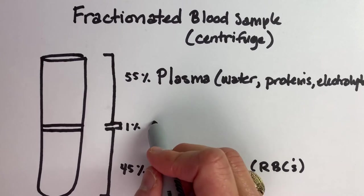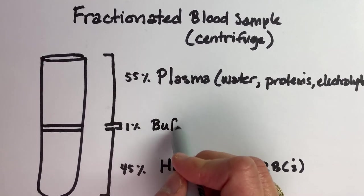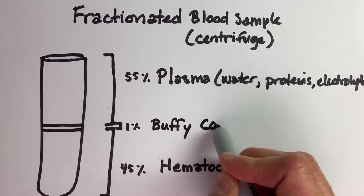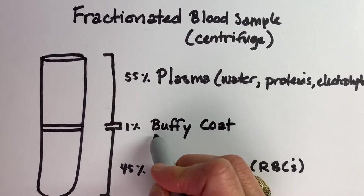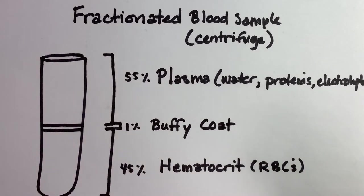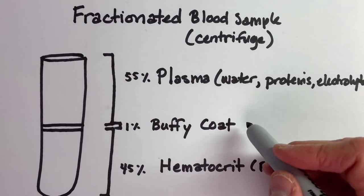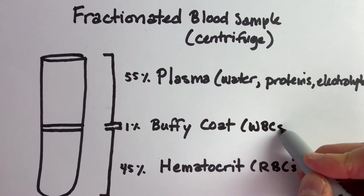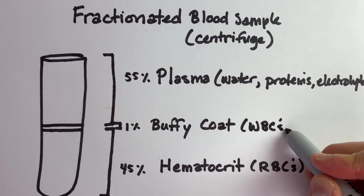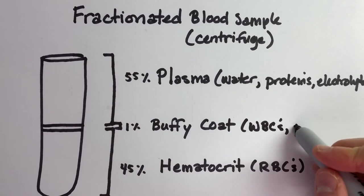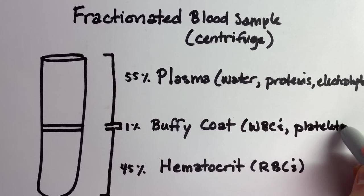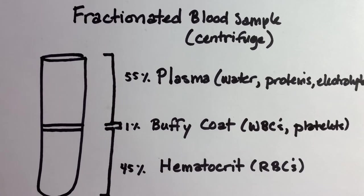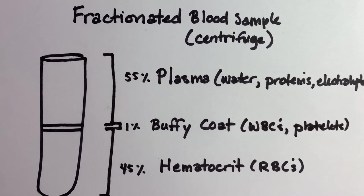And then right in the middle, you have this thing called a buffy coat. Buffy coat comes from the word buff, and the color buff is like a light tan or beige color. The buffy coat has things that kind of weigh in the middle. White blood cells, as opposed to red blood cells. So the white blood cells are your immune system. And then platelets, which are also involved in clotting, in addition to that fibrinogen protein I mentioned in the plasma.